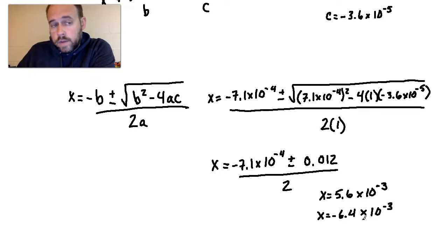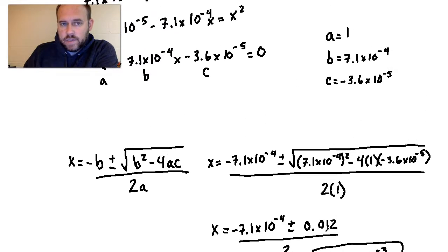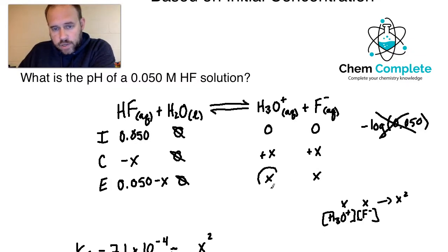So which one of these is not appropriate? Well, negative. We do not use negative values for molarity. So that means the correct value that I must utilize here is the 5.6 times 10 to the negative 3rd. That is my correct value. Now that is x. So x represents what? Well, if I come back up here, x represents H3O plus at equilibrium.